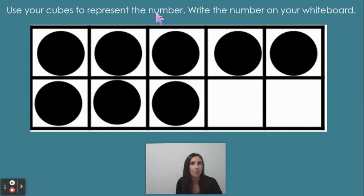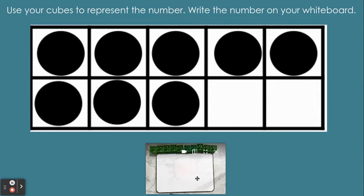Use your cubes to represent the number. Write the number on your whiteboard. So friends, you can grab 10 cubes, your whiteboard, and your Expo marker. And as you are grabbing your materials, I will turn my camera around. Okay. Awesome. So I'll give you a couple of seconds to get your materials together. Okay. Great.